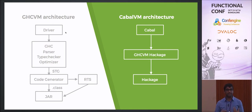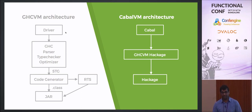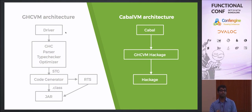The code generator is what I had to do completely from scratch, using the GHC code generator as inspiration. It converts STG code — this low-level intermediate representation of Haskell — to class files. Every Haskell module you write will compile to a jar file, and at the end when you want a single Uberjar, it links all of them together into one giant self-contained jar that also contains the runtime system.